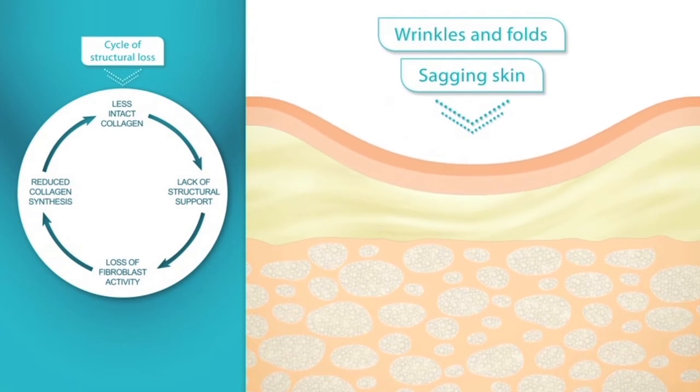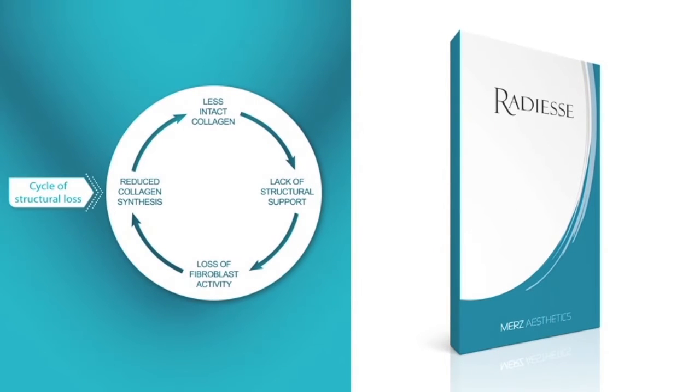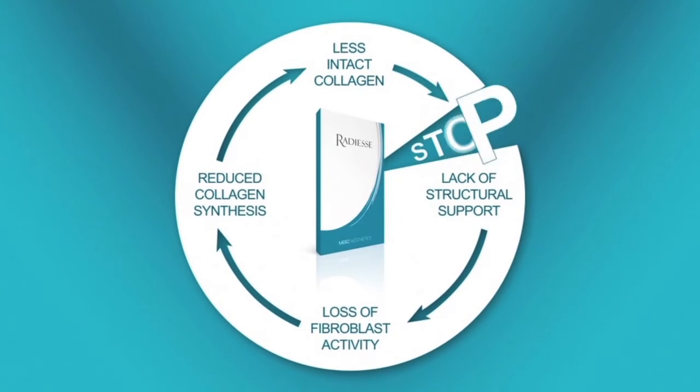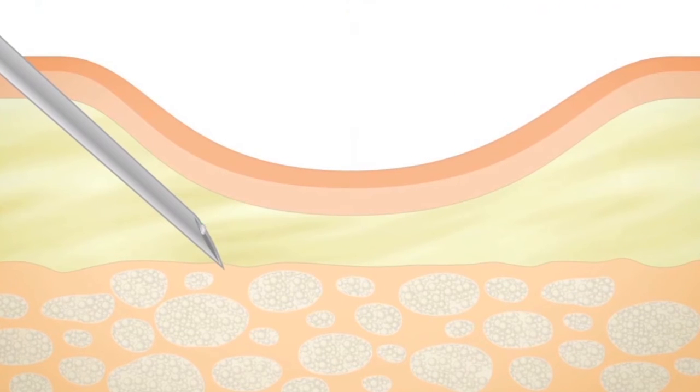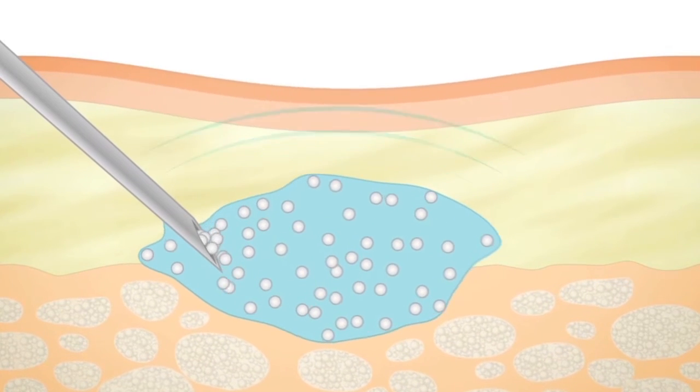Radiesse, with its unique composition of calcium hydroxyapatite microspheres in a gel matrix, can break this cycle of structural loss. Radiesse is injected directly into the deep dermis where it shows an immediate filling effect and corrects the localized loss of volume.